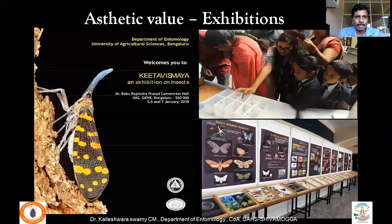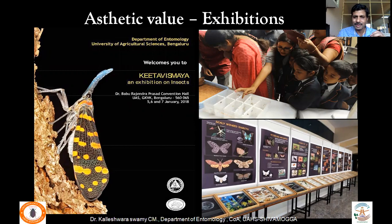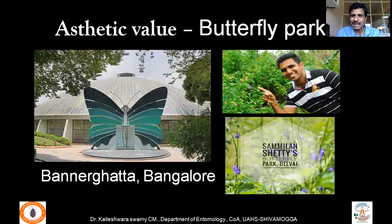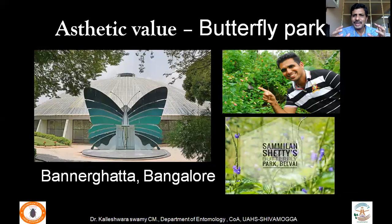Insects also have aesthetic value, and insect exhibitions are conducted throughout the world. For example, Keeta Vismaya is held annually in Bengaluru at Gandhi Krushi Jnana Kendra by the Department of Entomology, educating young children about insect conservation. Because of their aesthetic value, butterfly parks have also been developed — like the Panerigata butterfly park in Udupi district, Udubidre — to promote insect conservation.